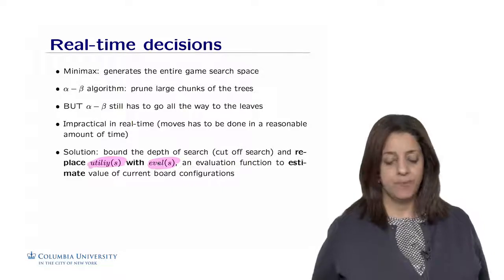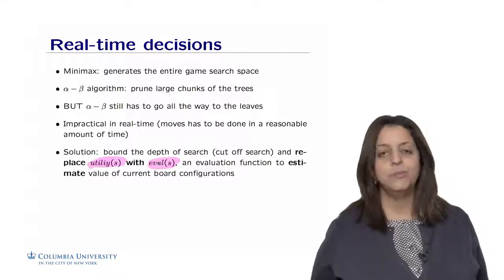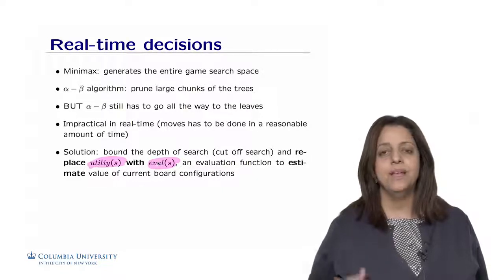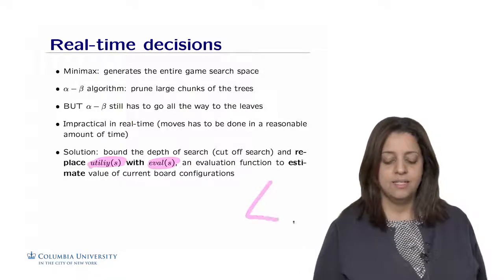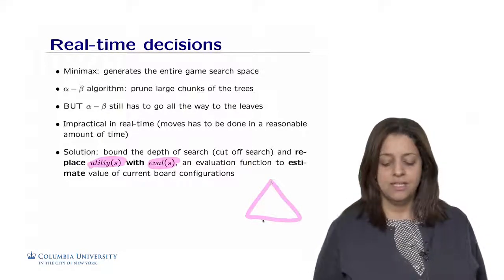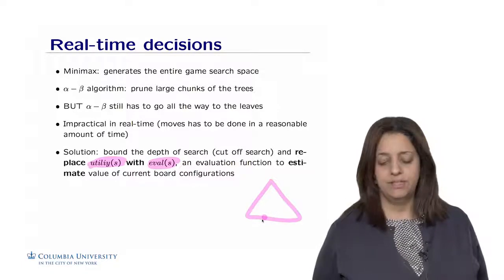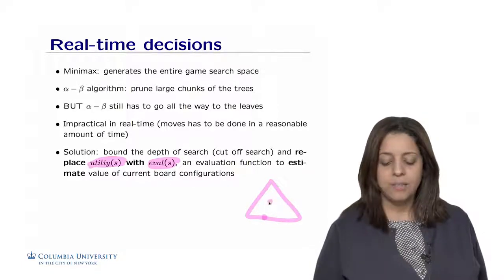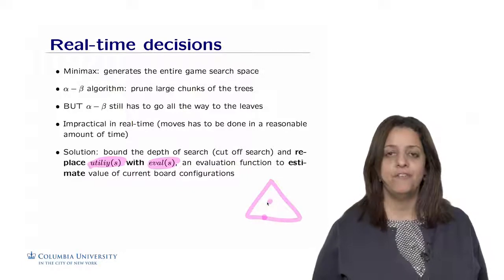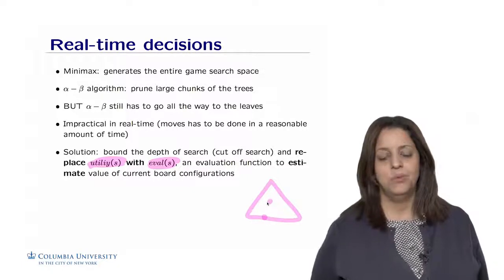In which we are going to replace the utility function with an eval function that actually is an evaluation function or heuristic to estimate the value of the current board configuration. So in this case, the idea of Shannon is to say that given the search space, instead of going all the way till the leaves to find the true utility of the terminal state, let's stop earlier and have an estimation of the value of the board at that node here.